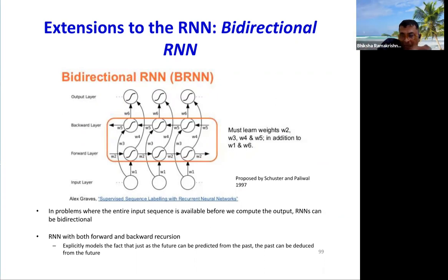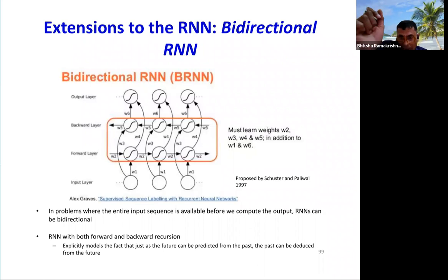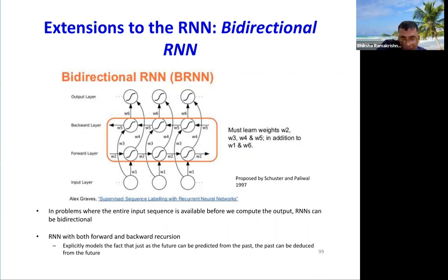Because if the past predicts the future, the past can also be deduced from the future. So you're analyzing a sentence like 'when Tom was young, he played baseball.' If you're going left to right, when you see the word Tom, you know to expect the word 'he' and not 'she.' But if you go from the end to the beginning, when you see the word 'he,' you know to expect that somewhere earlier in the sentence there's a male name and not a female name. So you have both forward and backward predictability.